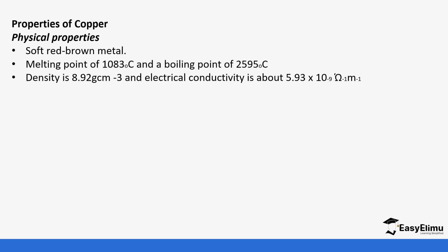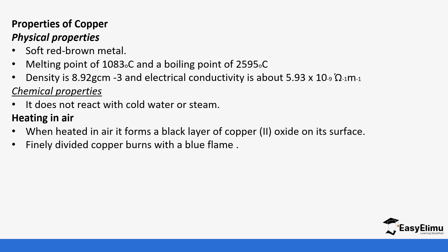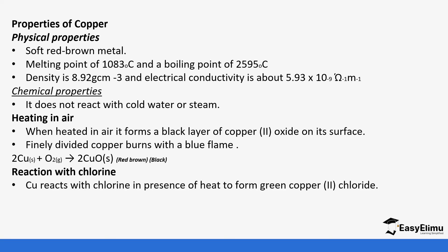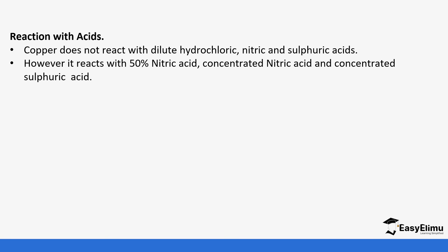Some properties of copper: it is a red metal with a melting point of 1083°C and a boiling point of 2595°C. Its density is around 8.29 g/cm³ and it is a good conductor of electricity. It does not react with cold water or steam — remember, copper is low in the reactivity series. When heated in air it forms a black layer of copper oxide on its surface, and when finely divided it burns with a blue flame. It also reacts with chlorine in the presence of heat to form copper(II) chloride. Regarding acids, it does not react with dilute nitric acid or dilute sulfuric acid, but it can react with 50% nitric acid.